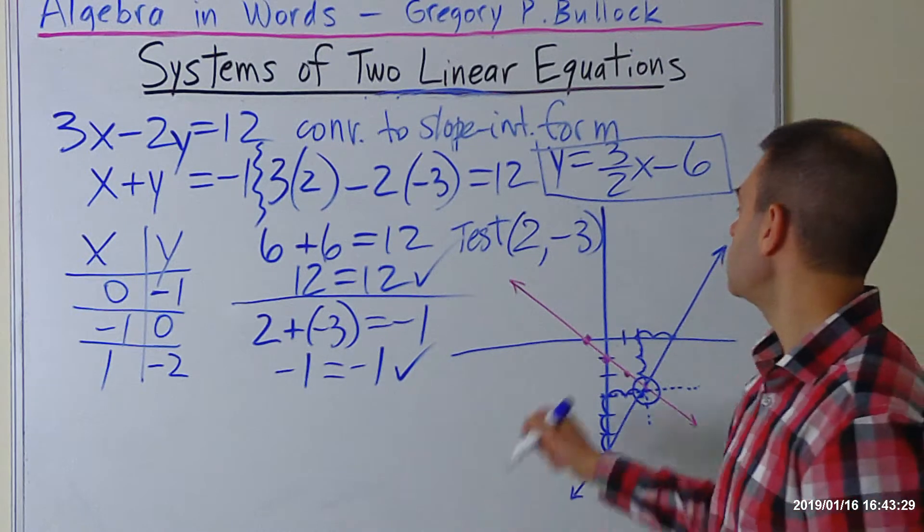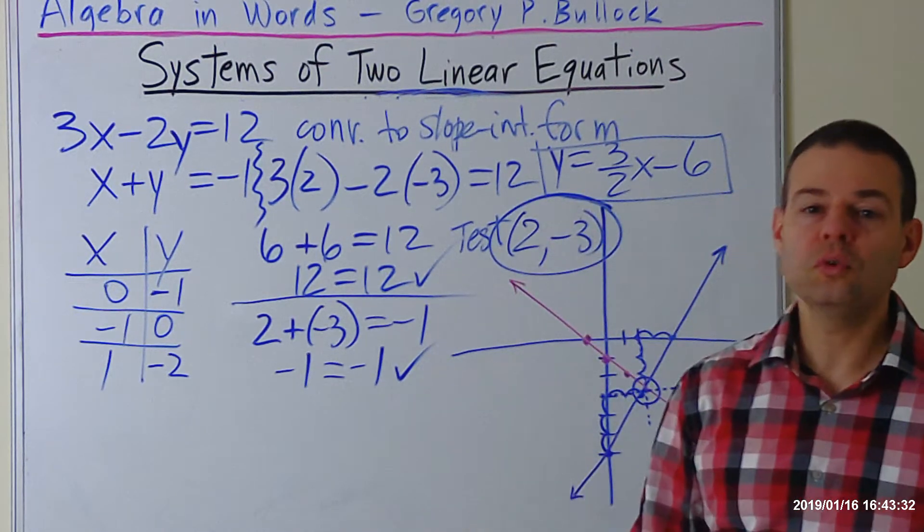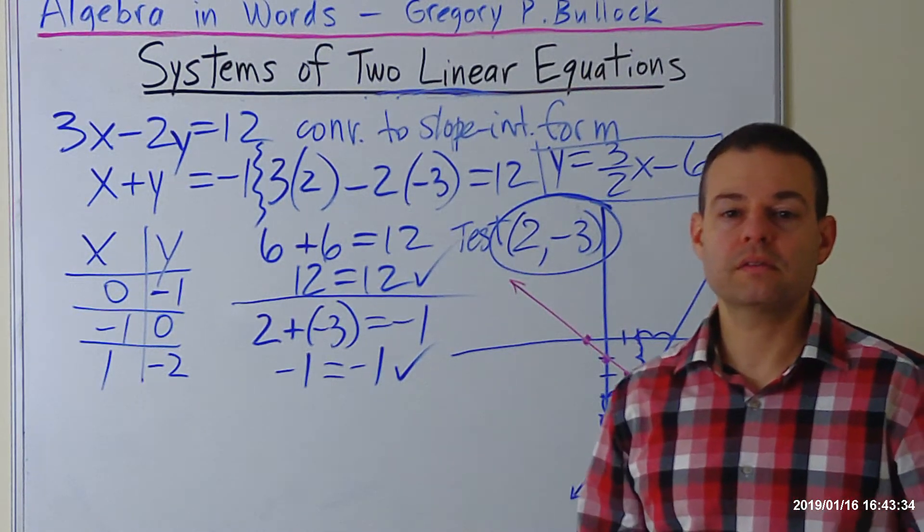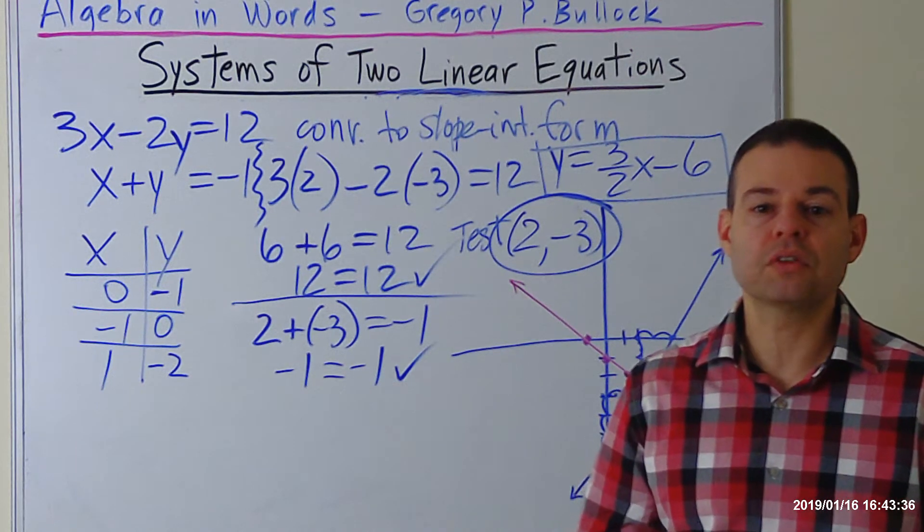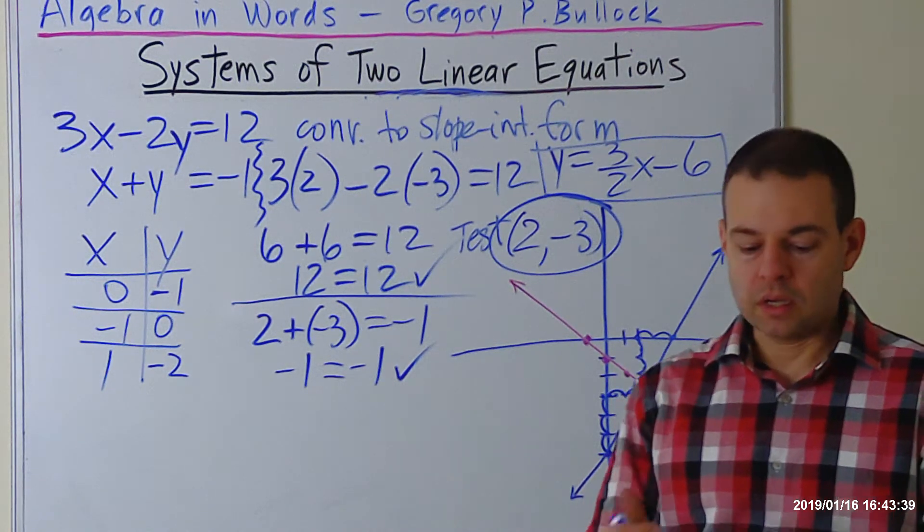And that tells us that the point that we tested, 2 comma negative 3, is the correct solution to the problem. That is the point of intersection.